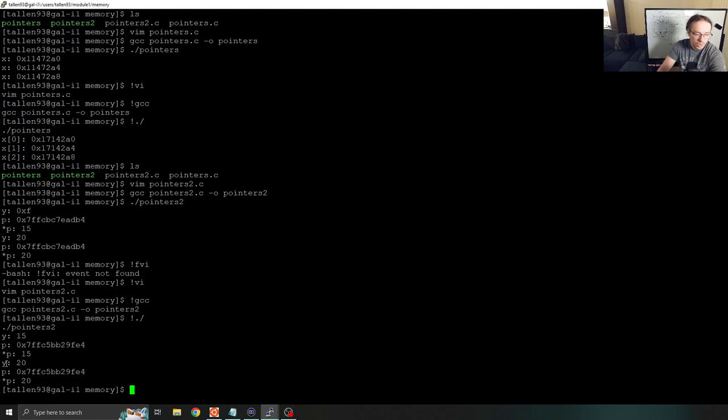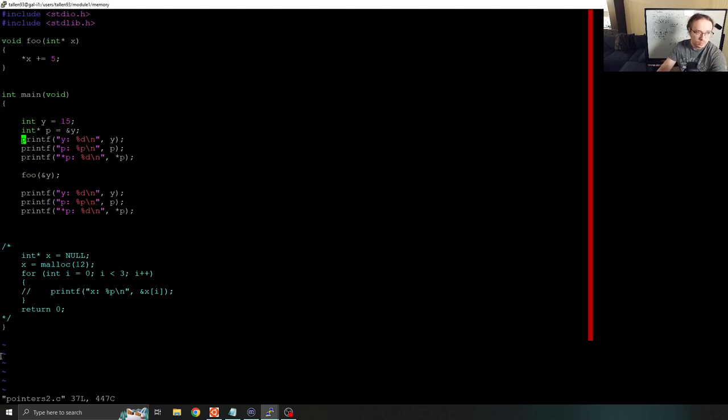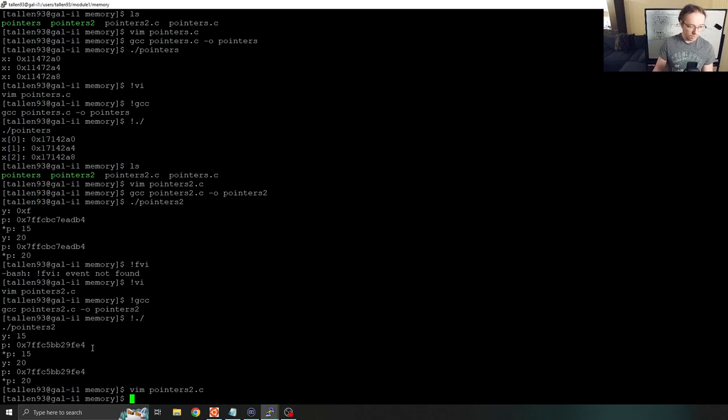And then after we call our function, we see y equals 20. Our memory address is the same, and star p is also 20. So to look back at the code, well, we passed in the address of y, we added 5 to the value of y. And then that was it. So 15 plus 5 is 20. And that explains how we got the answer that we got.